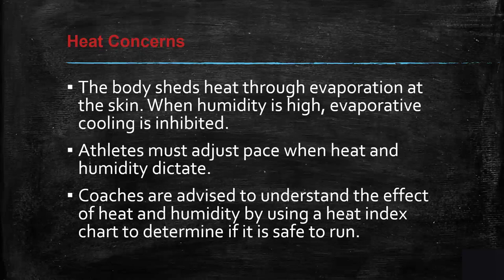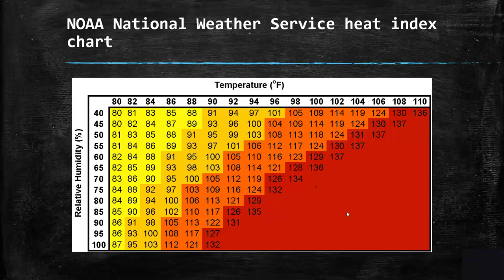The body sheds heat through evaporation of the skin. When humidity is high, evaporation and cooling are inhibited. Athletes must adjust their pace when heat and humidity are high, so modify training accordingly. Use a heat index chart — looking at relative humidity and temperature — to understand when conditions become more detrimental or high-risk.